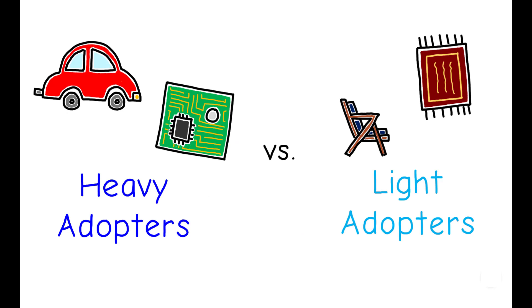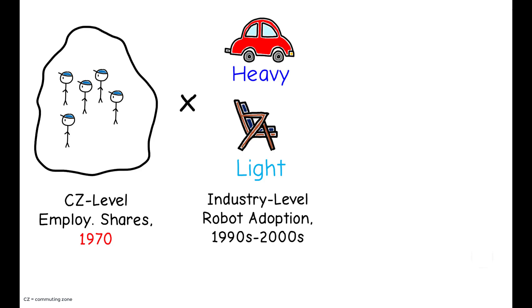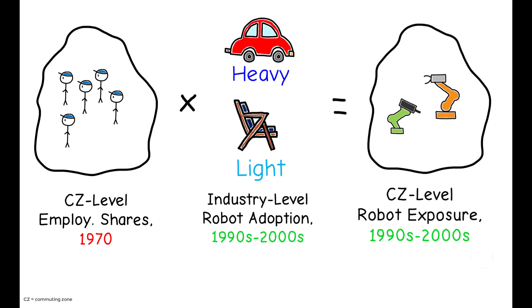The author's strategy is to rely on industry-level differences in rates of adoption. Using commuting zones, or CZs, as their local markets, they ask: Given employment shares at this local level in 1970, and the subsequent evolution of different industries over the 1990s and 2000s, which geographic markets were most likely to be exposed to robot adoption over that period?